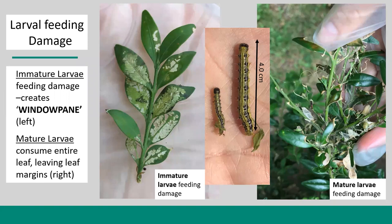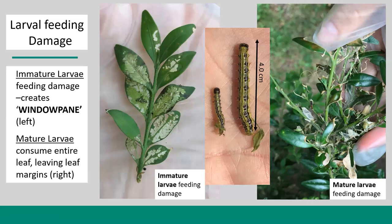Another way to identify BTM presence is by looking at the different types of foliar damage. Young, immature larvae create what we call windowpane damage — with their small mandibles they can only eat a single layer of the leaf. If you hold that branch up to a light source like the sun, you can see right through that leaf layer. Compare this to mature larval feeding, where larvae consume the entire leaf, leaving only the margins or veins. After a few weeks, this desiccation looks like skeletonized branches.